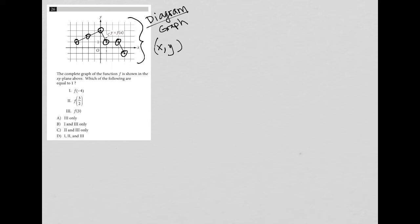So F of negative 4 is basically saying when X equals negative 4, what does Y equal? Well, let's see. So when X is negative 4, that's negative 1, negative 2, negative 3, negative 4. Yes, Y is 1. So that's true. And because that's true, that means A cannot be correct and C cannot be correct. How about F of 3 halves?